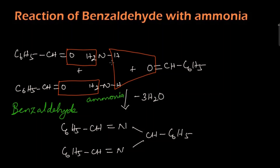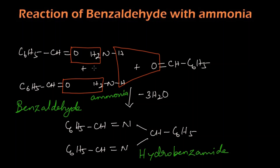To summarize: three molecules of benzaldehyde react with two molecules of ammonia, and three water molecules are eliminated, as shown in the picture. What we get is hydrobenzaldehyde. Thank you.